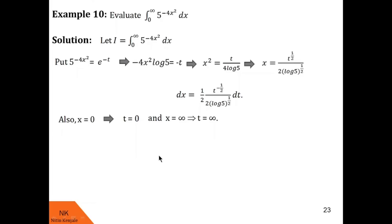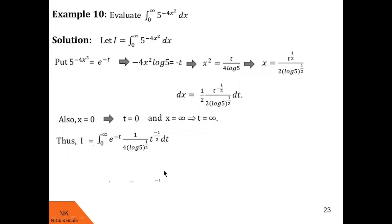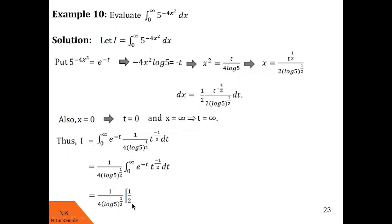Now transforming this integral i, it becomes the integral from 0 to infinity of e^(-t) · (1/2) · t^(-1/2) / (2 · (log 5)^(1/2)) dt. The 1/2 · 1/2 becomes 1/4. Taking out the constant denominator, we have inside the integral e^(-t) · t^(-1/2) dt. By the definition of gamma of n, this equals gamma(-1/2 + 1) = gamma(1/2). We know gamma(1/2) = √π. So the value of i is √π / (4 · (log 5)^(1/2)).